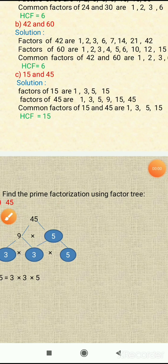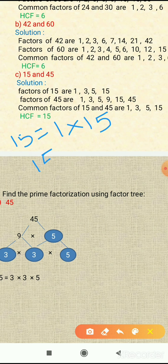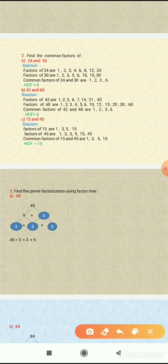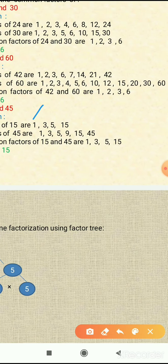The next example is 15 and 45. First we will find the factors of 15. We will see how to get 15: 1 multiplied by 15, and 3 multiplied by 5 gives 15. So the factors of 15 are: 1, 3, 5, and 15.